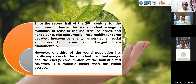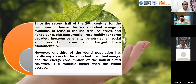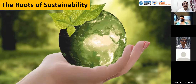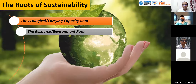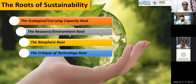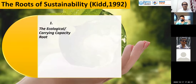So this is how the major epochs and the concept of sustainability came up. The concept of sustainability is not new — it is as old as human civilization, and it is directly related to energy. Let us have a quick look at the modern understanding of sustainability. If you look into it, the roots of sustainability include: ecological carrying capacity, resource environment route, the biosphere route, and critique of technology route.